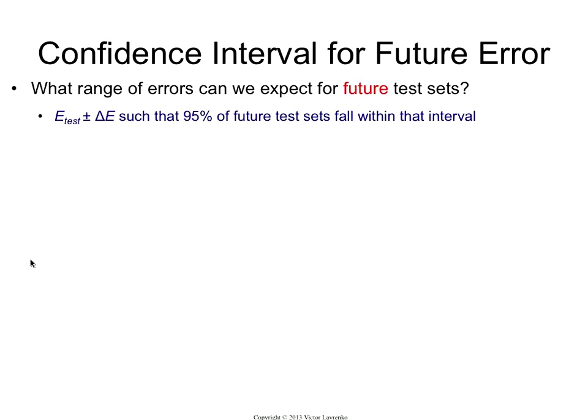You can never guarantee what your maximum error would be. If you could, you wouldn't have had the financial crisis. The financial crisis happens when you set yourself a boundary, say, I want a 95% confidence interval, and then a test set comes which is in that darn 5% that you didn't account for.